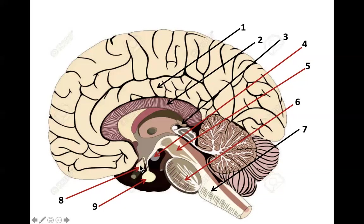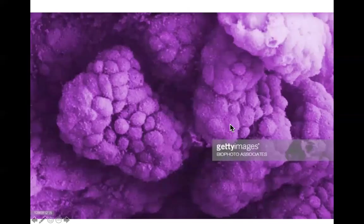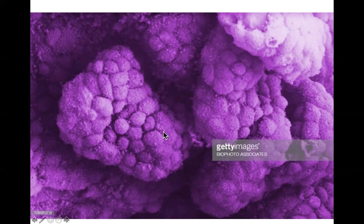Number eight is the optic chiasm and the optic nerve, which transmits information from the eye to the brain for processing. Number nine is the pituitary gland, which secretes a whole plethora of different hormones. This is the choroid plexus — the primary function of the choroid plexus is to create cerebrospinal fluid, CSF. We're going to talk a little bit more about it later.